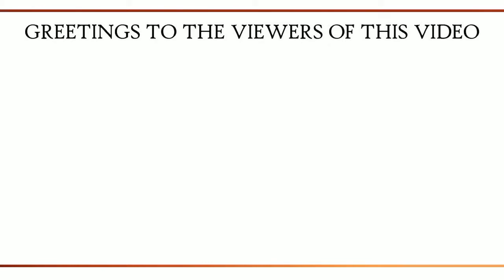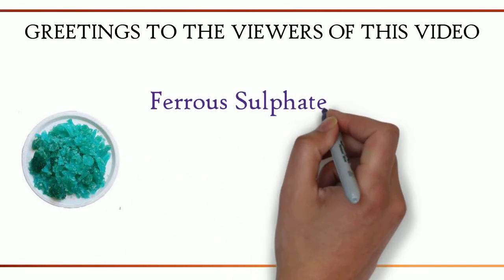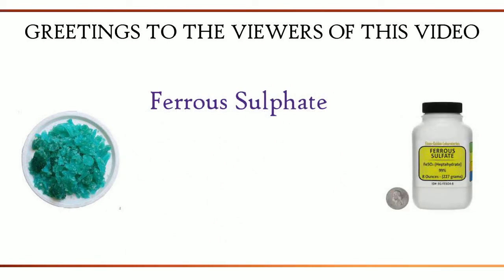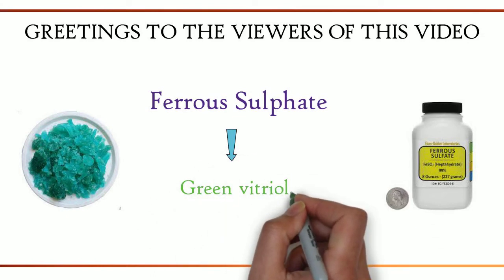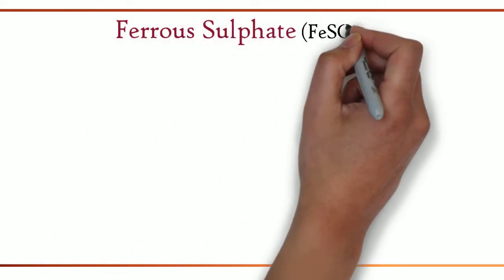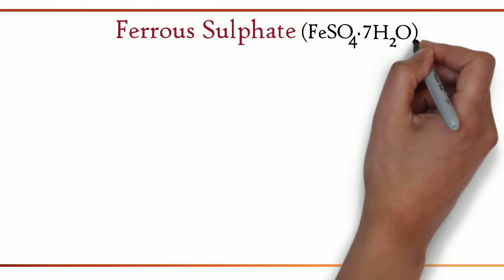Greetings to the viewers of this video. In this video, we are going to see about the chemical compound ferrous sulfate. It is otherwise known as green vitriol. The formula for ferrous sulfate is FeSO4·7H2O.